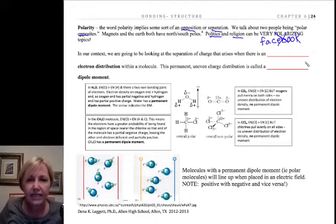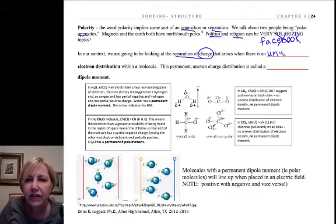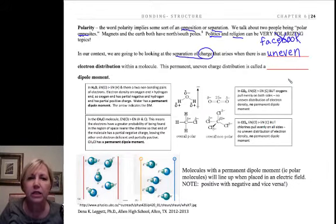In our context of polarity, we're talking about a separation of charge when there is an uneven electron distribution within a molecule. The electrons are very mobile. They move around a lot.